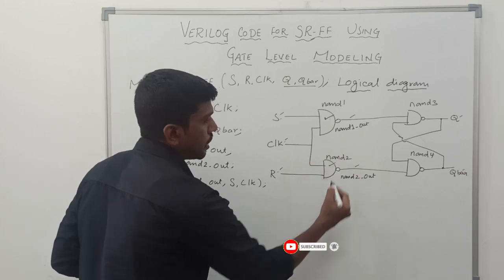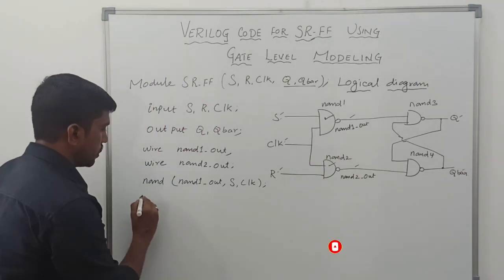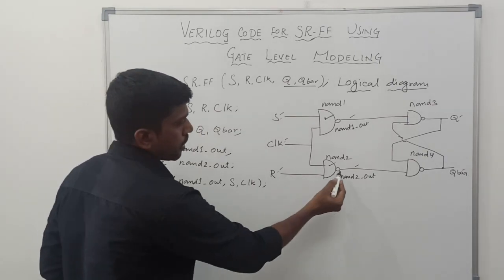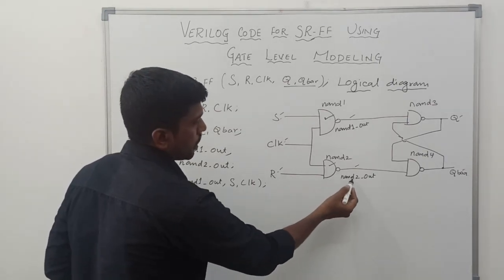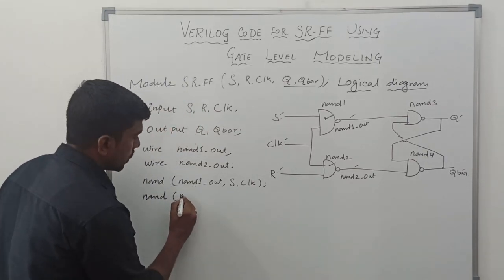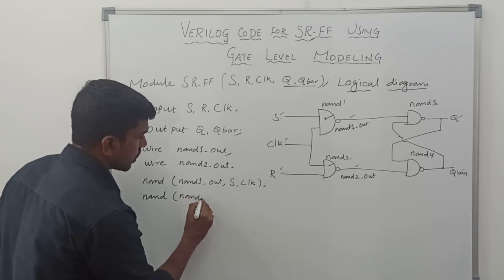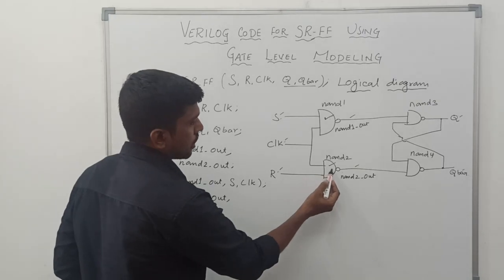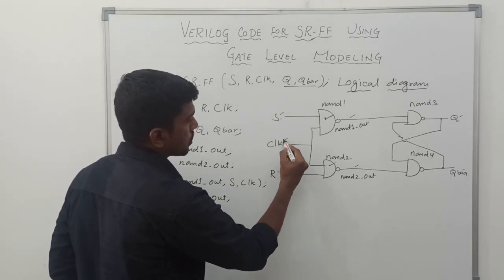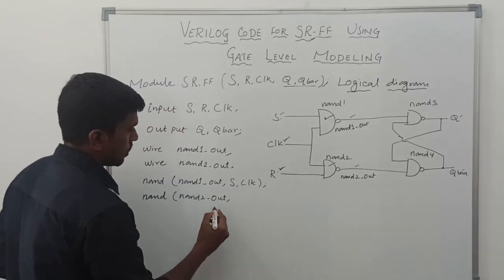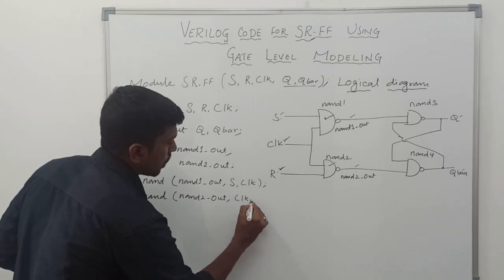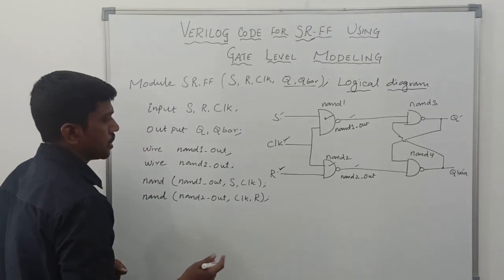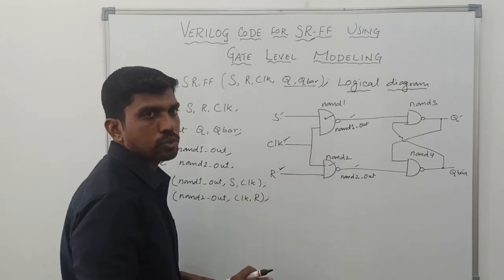Next we consider NAND gate 2. The output of NAND2 is NAND2-out. The input signals of NAND2 are R and clock. The second NAND gate operation is now complete.